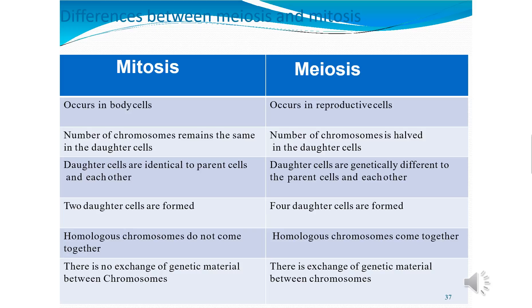In mitosis, homologous chromosomes don't come together, whereas in meiosis, homologous chromosomes do come together. These are the major differences we have to learn properly.